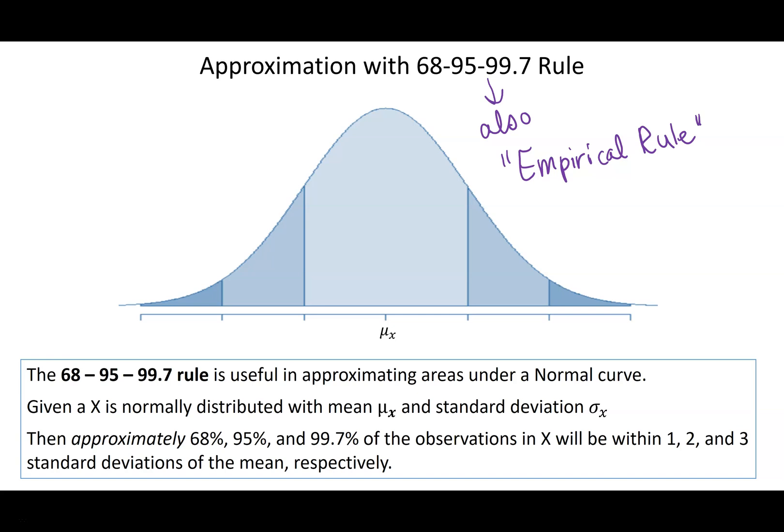So the idea is it's useful for approximating area underneath the curve. So if you know that x, so this is whatever x is, it's roughly normal with a mean of whatever mu of x is, standard deviation with whatever sigma is, you can use this property.